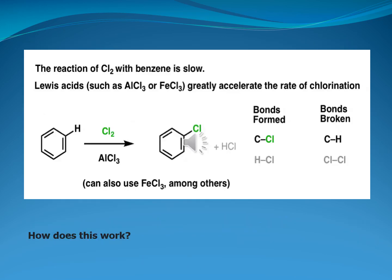We can prove it with the example of chlorination, in which the reaction of chlorine with benzene is slow. Lewis acids such as aluminum trichloride or FeCl3 greatly accelerate the rate of chlorination. The reaction of benzene with chlorine is carried out in the presence of AlCl3, and we obtain a substituted chlorinated benzene molecule in which bond formation occurs between carbon and chlorine, and bond breaking occurs between carbon and hydrogen.